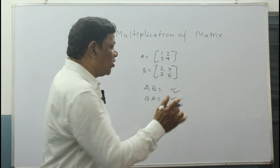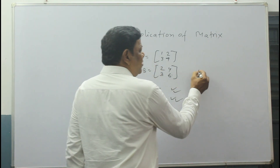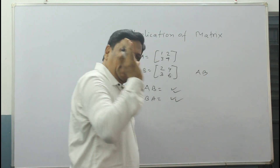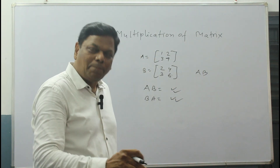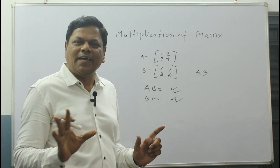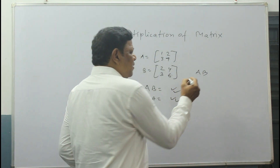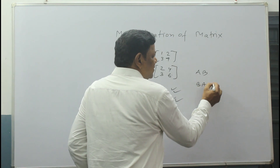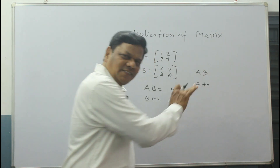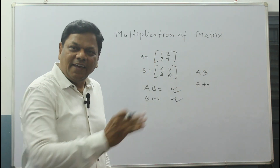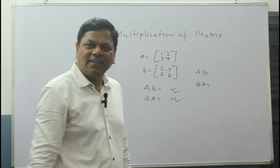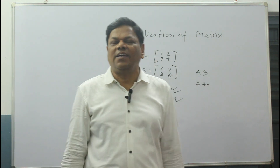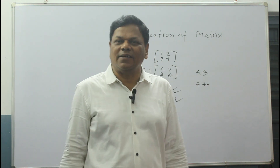So if the order given is A into B, we have to write A first and B second, then multiply. If it is given BA, then write B first and A next, then multiply. The order we cannot change and multiply.